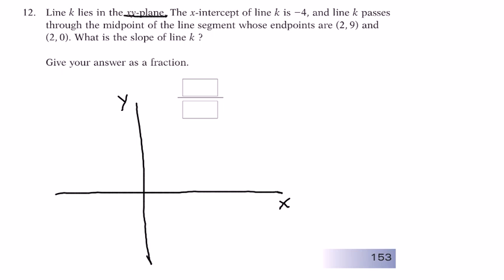all that means is a graph that you've known since maybe sixth grade. X-intercept of line K is minus 4. What does X-intercept mean? It means it's where it crosses the X-axis. So, let's put that about right here. We're going to say the point is actually negative 4 comma 0.